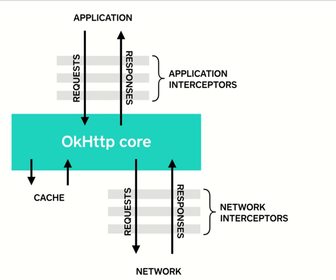OKHttp3 is an HTTP and HTTP/2 client for Android and Java applications, created by great engineers at Square, and it's totally open source. You can download the jar file or add it inside your Android or Java applications — it's totally up to you.